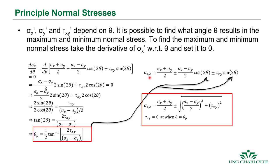In plane stress there's no sigma 3, but keep in mind we always have a three-dimensional state of stress. The convention is sigma 1 is the largest, sigma 2 is the next largest, and sigma 3 is the smallest. If you have sigma 1 positive and sigma 2 negative in the plane stress case, there is actually a third stress somewhere in between — and that stress is zero for plane stress. This is important because the max in-plane shear is not necessarily the same as the max shear on the element.